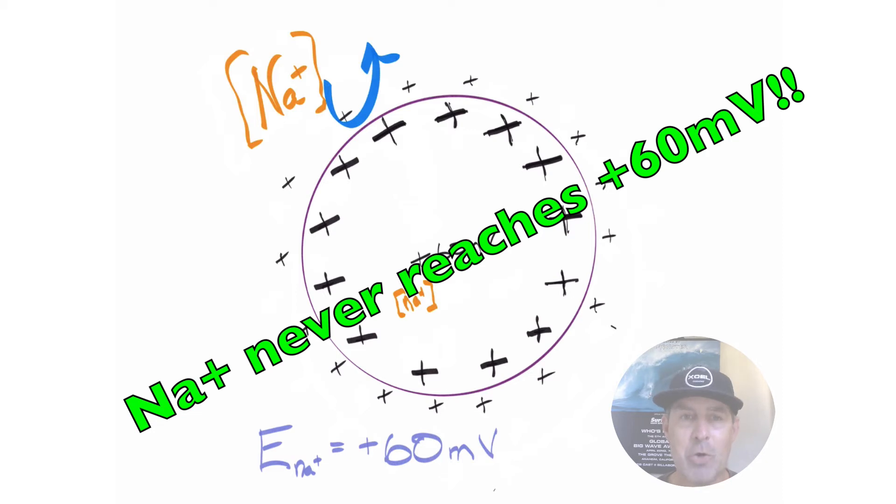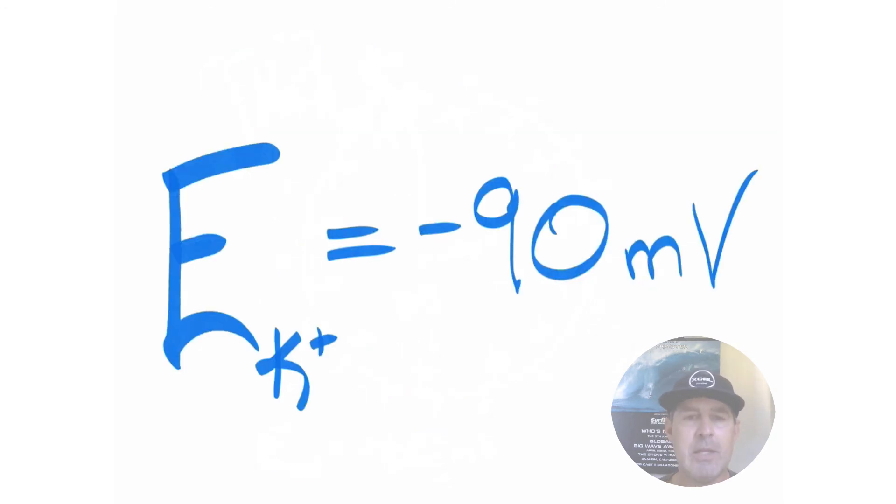Because it's become so positive in the interior of the cell, that repels sodium. That is sodium's equilibrium potential at positive 60. It's the voltage at which sodium decides, I am no longer going into the cell, even though I still have a huge chemical gradient favoring me to move into the cell, or favoring sodium to move into the cell.